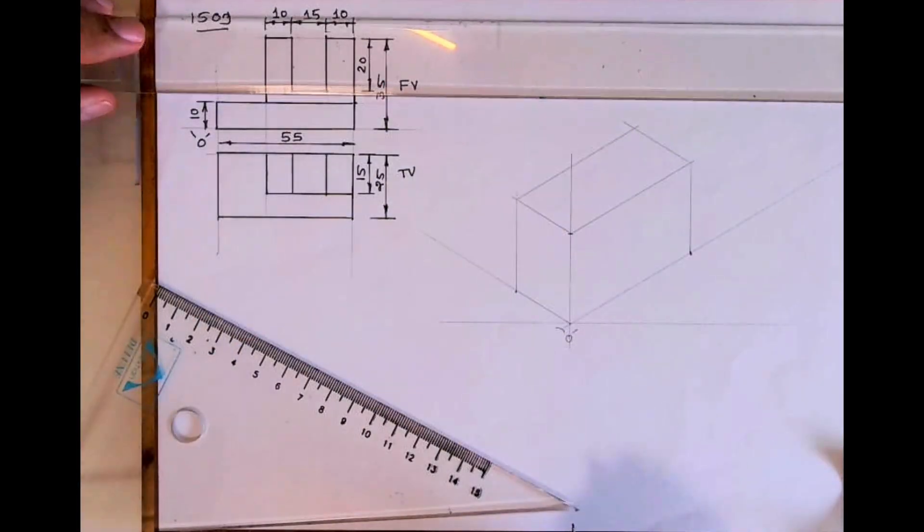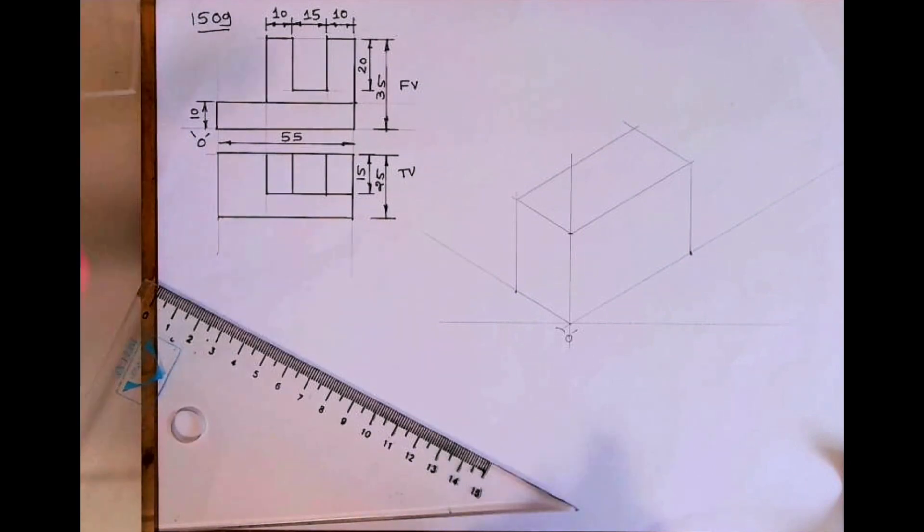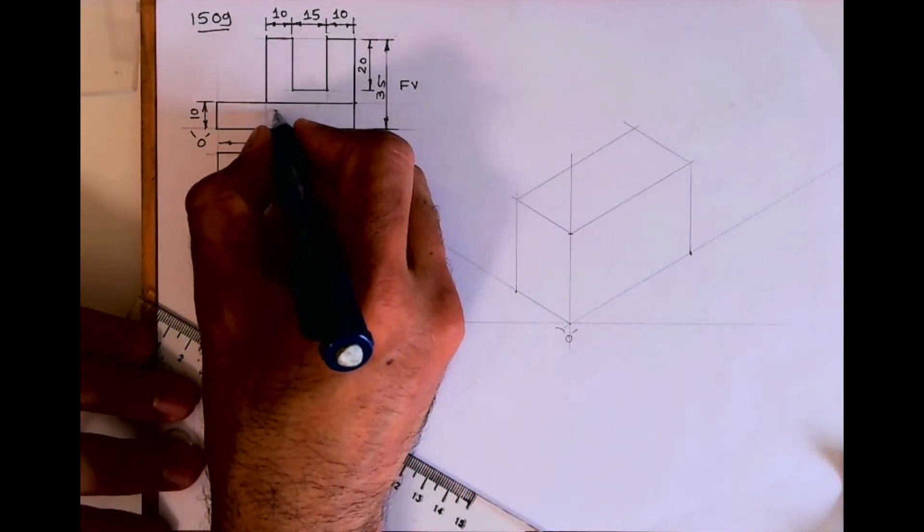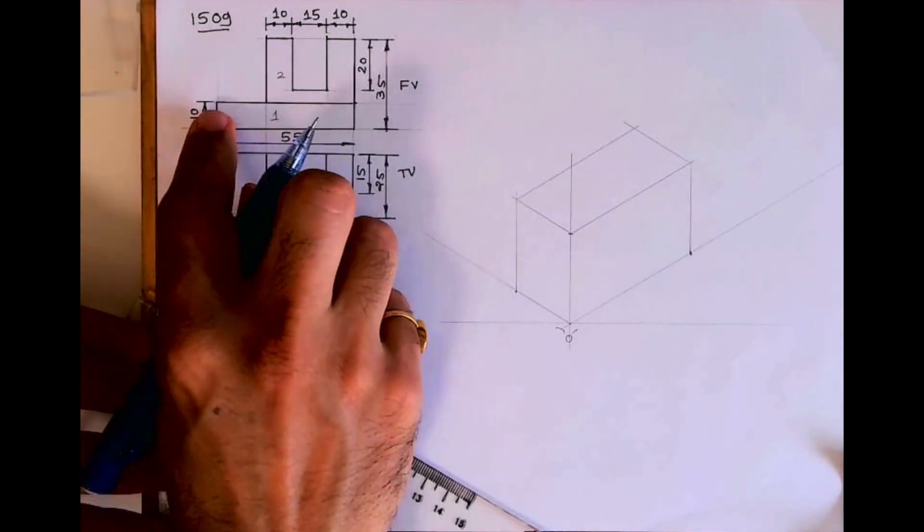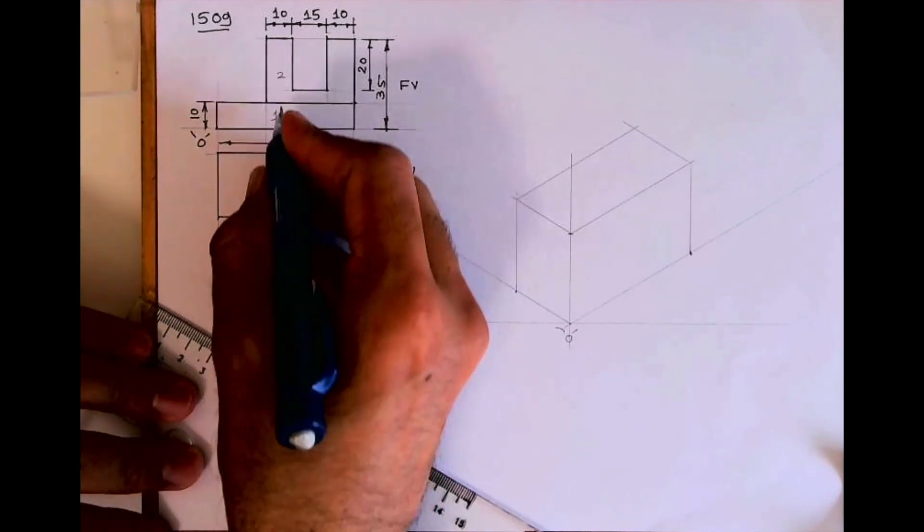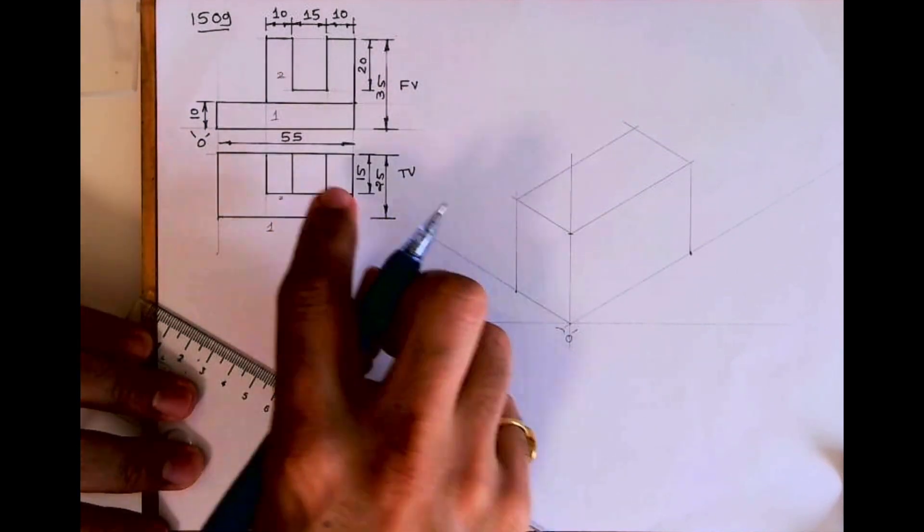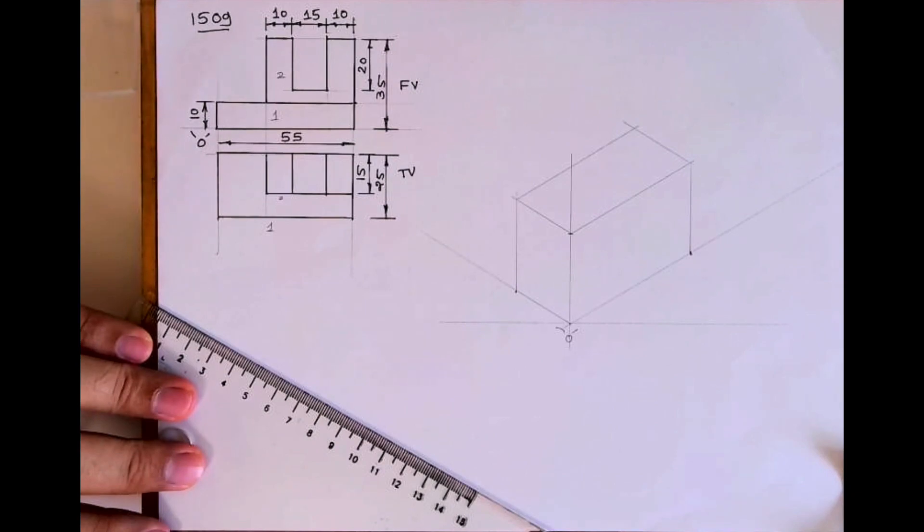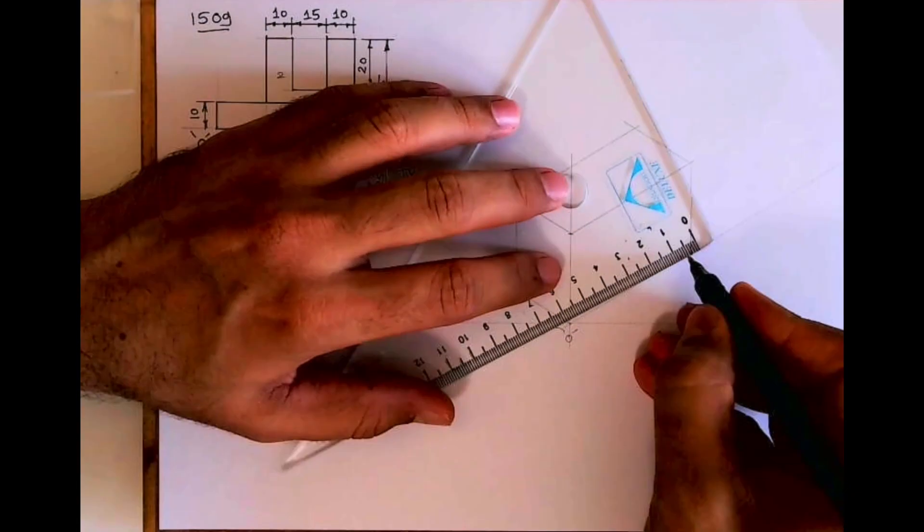Now after that, if you see in this sum, how many parts are there? This is part one, this is part two. Part one is nearer to you. If you see in top view it is down, so I'll draw part one first, then I will draw part two.